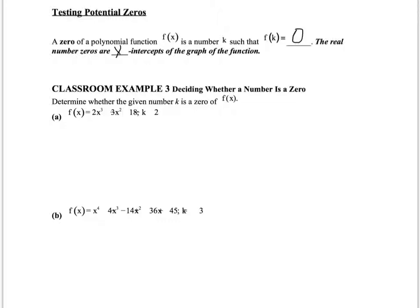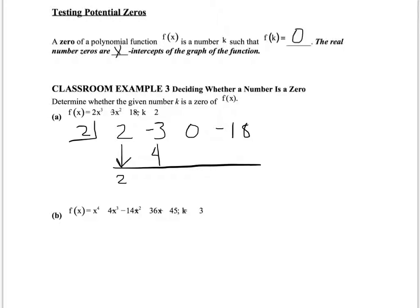We're going to determine whether a given number is a zero of the function. This first problem gives k equal to 2, so 2 is our divisor. Checking the terms: we have x³ and x² terms, but there's no x term, so I put a zero as a placeholder. My row of coefficients is: positive 2, negative 3, zero, negative 18. Bring down the 2. 2 times 2 is 4; negative 3 plus 4 is 1. 1 times 2 is 2; 0 plus 2 is 2. 2 times 2 is 4, giving negative 14 in the remainder spot.